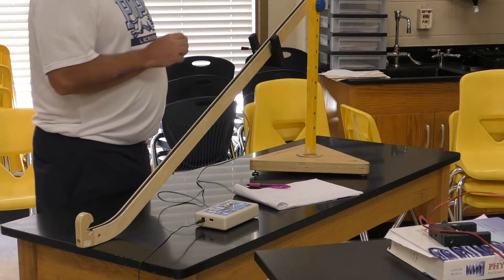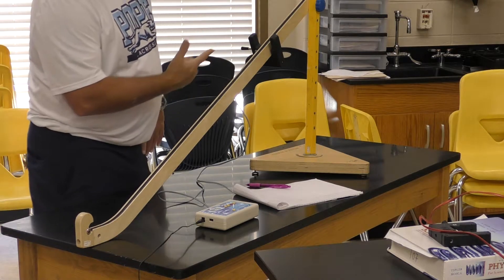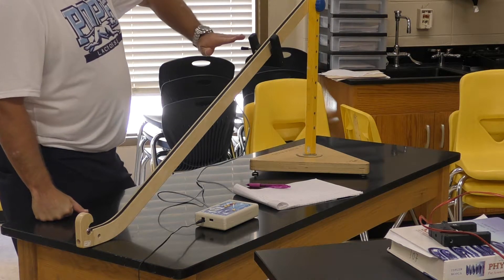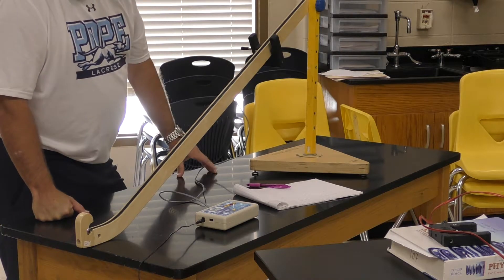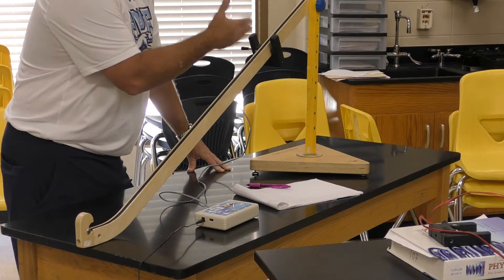What we're going to do is you're going to get measurements for four different data points. You're going to get the distance down the ramp that the photogate is, you're going to get the time that the ball is in the photogate, and from that information you're going to have to find the velocity of the ball.